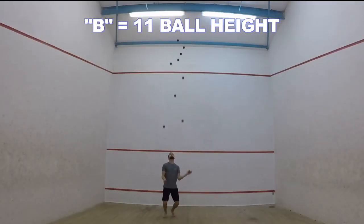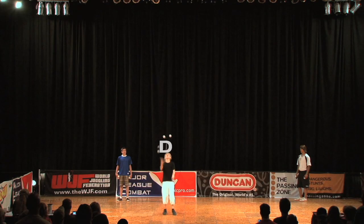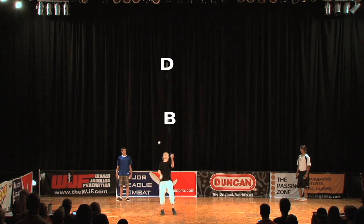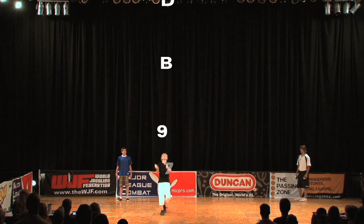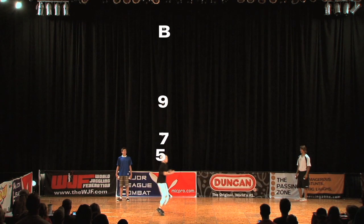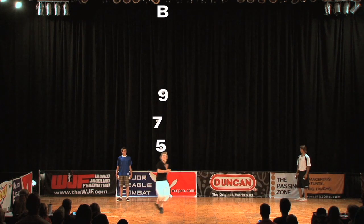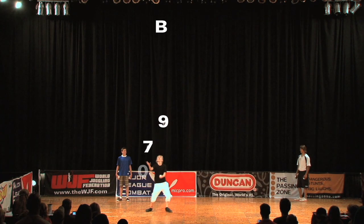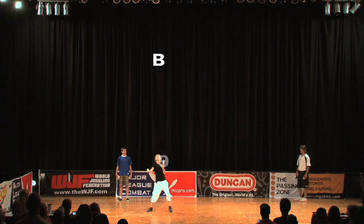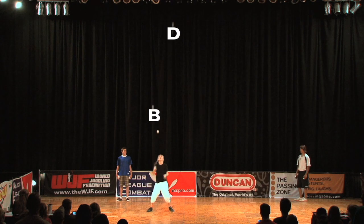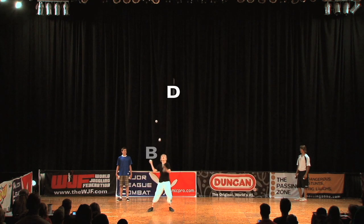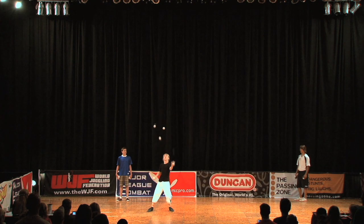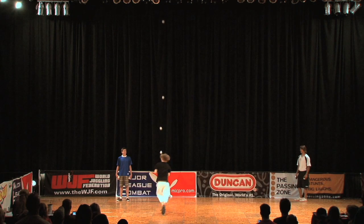Odd numbers cross, even numbers do not. So in the DB9750000, all throws are crossing and each throw is lower than the previous throw after the D. The 0s are placeholders for beats where throws could happen but don't, because there are no objects in the juggler's hands.